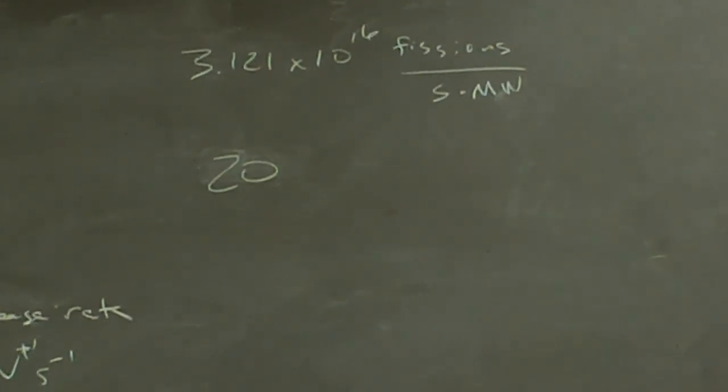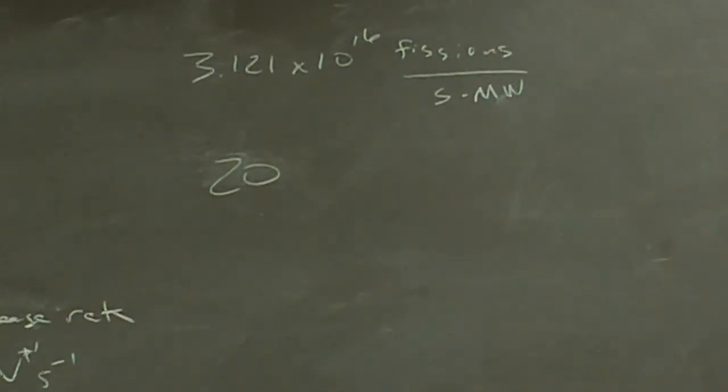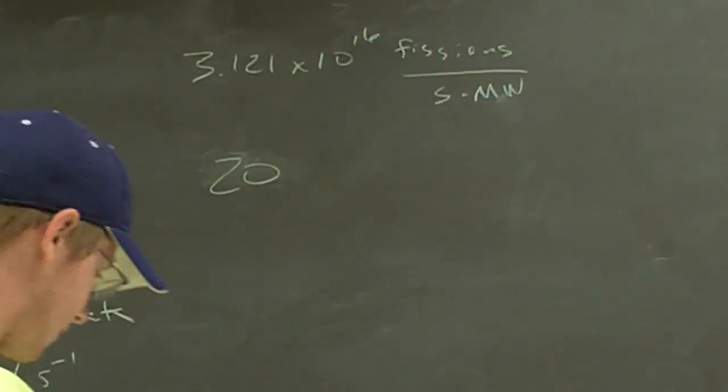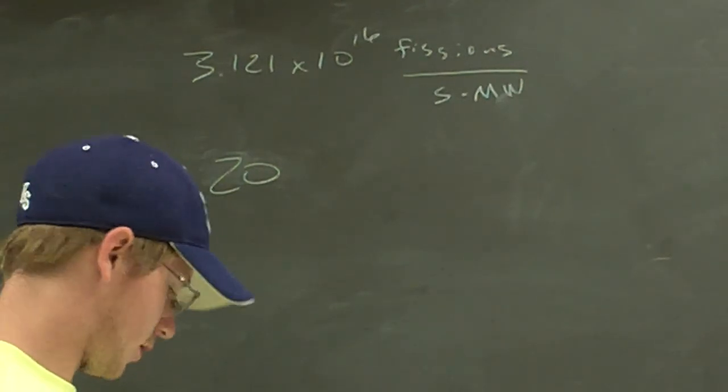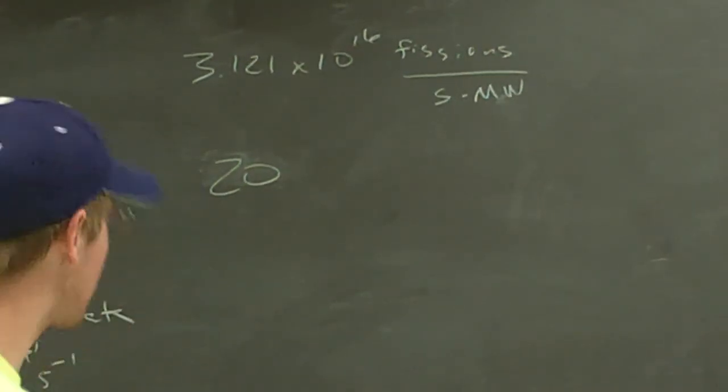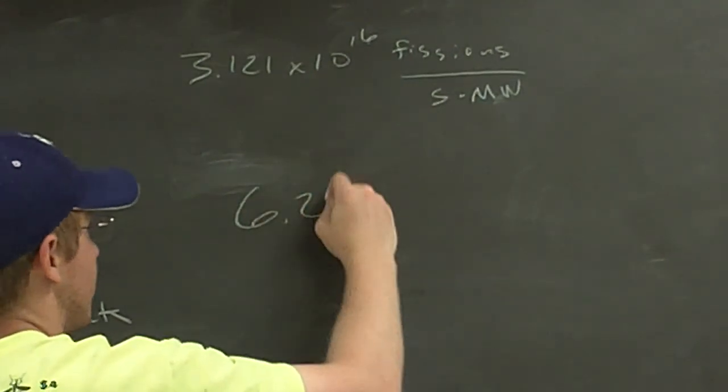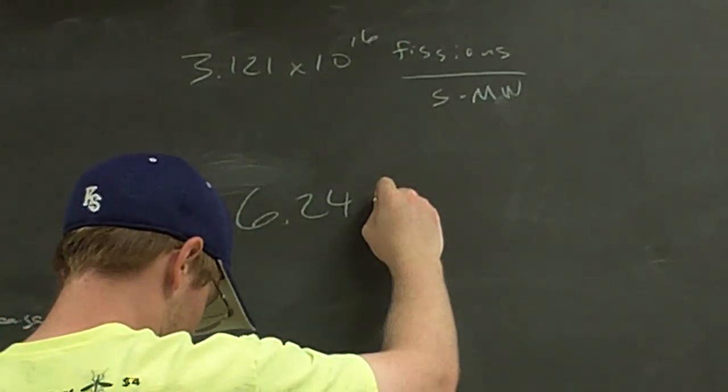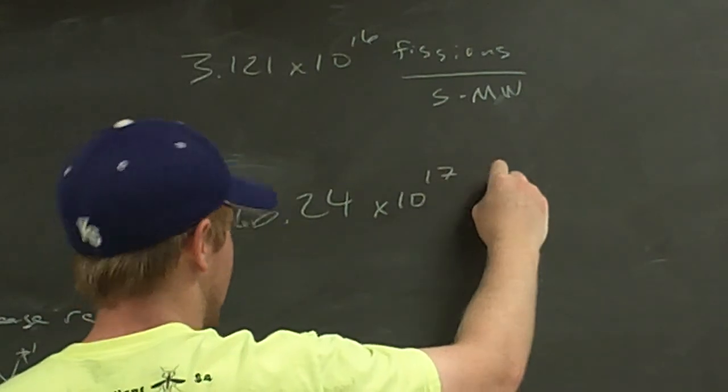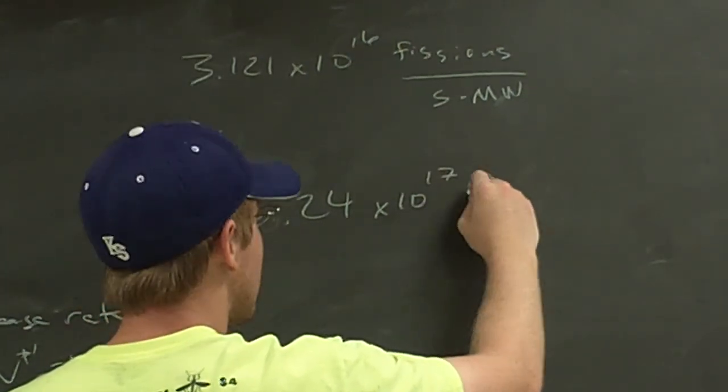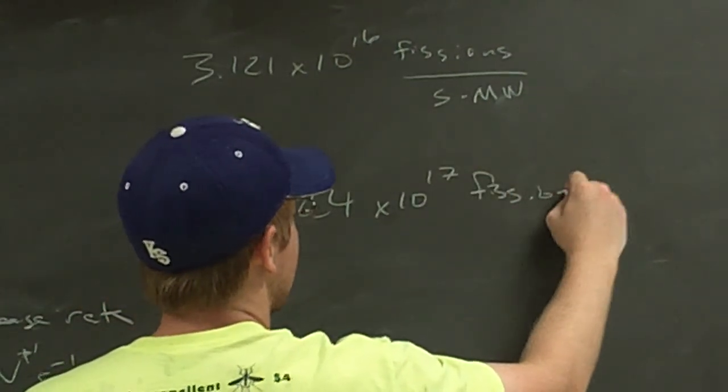At least page 99 says look at Appendix V for the thermal neutron fission stuff. That's what I've written in mine. That works for me. So you should get 6.24 times 10 to the 17 fissions per second.